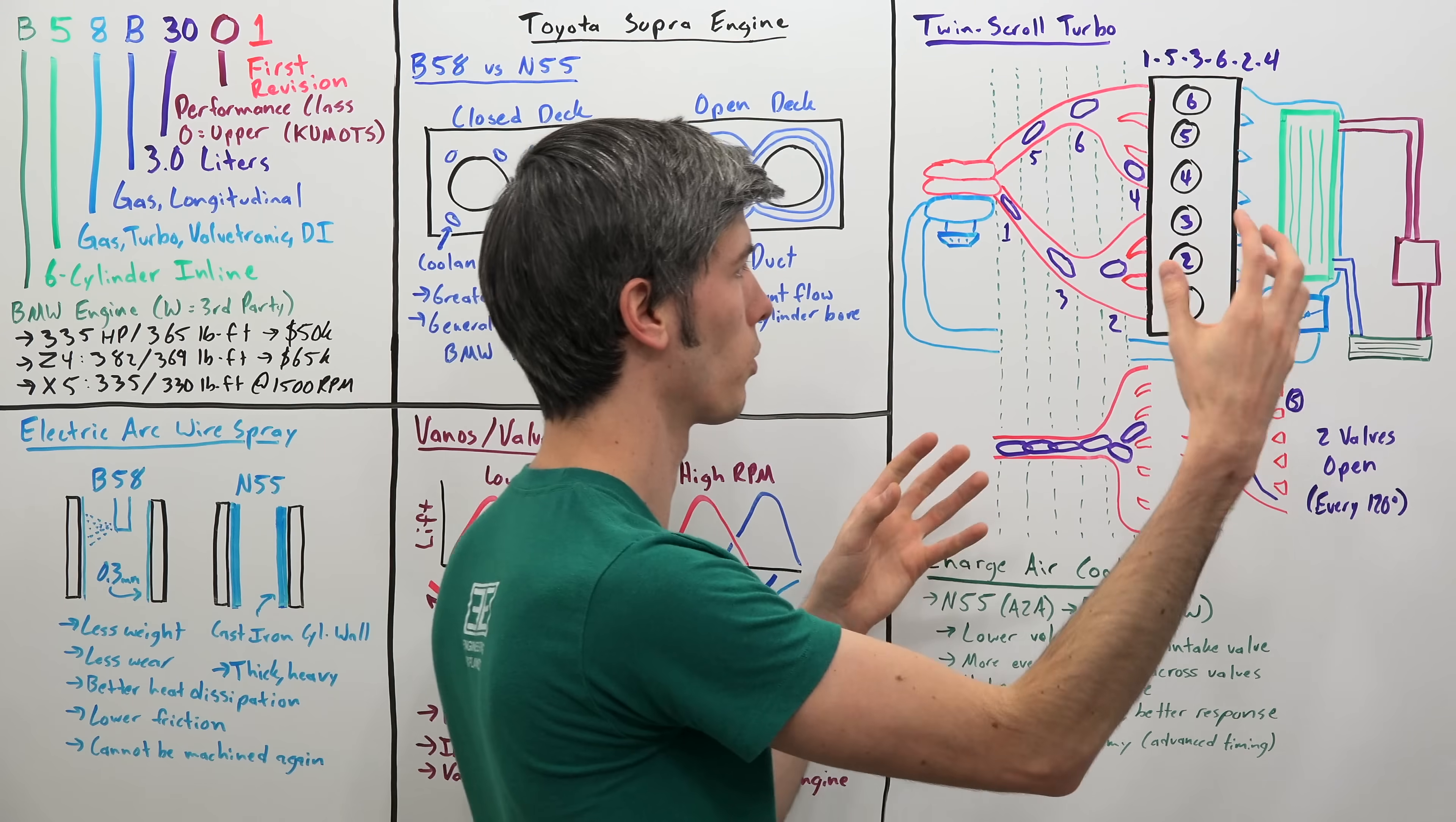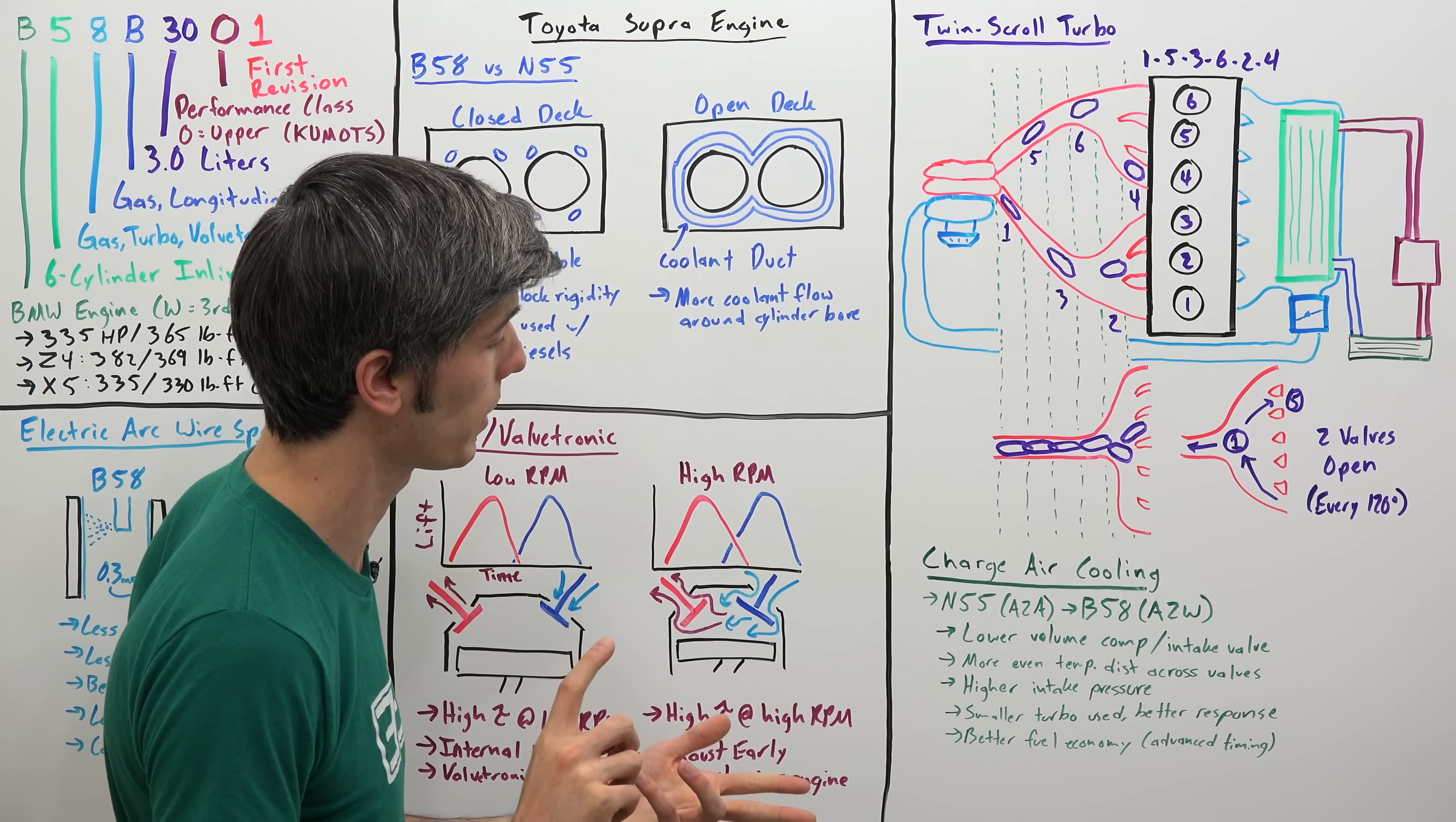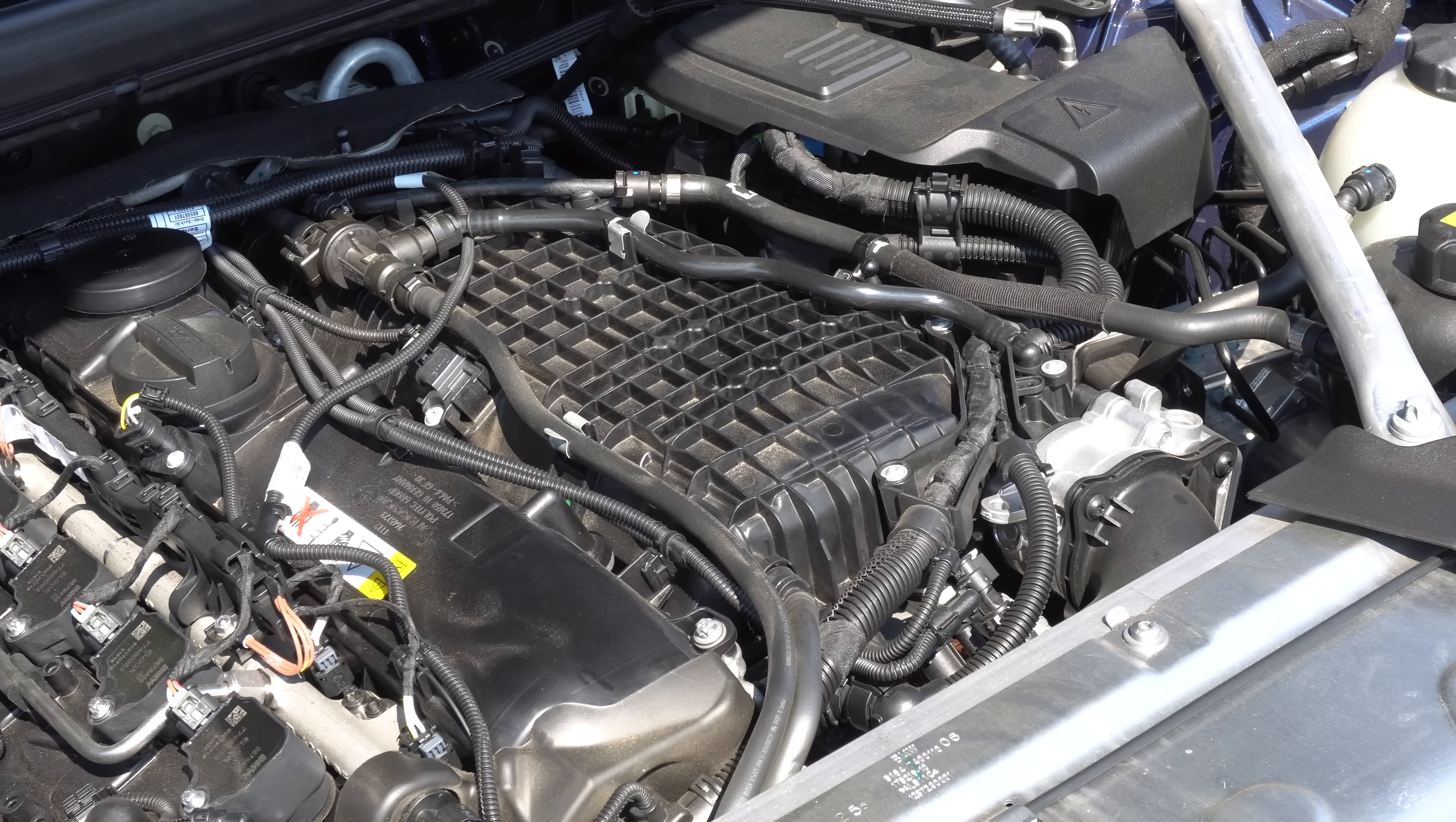It also has a higher intake pressure, of course, using that intercooler reducing temps and increasing the density of that air before it passes into the cylinders. They say they've been able to use a smaller turbocharger which improves response, and that they have been able to improve fuel economy by decreasing the temperature of the air going in. That means combustion temperatures are low and they can use a bit more advanced timing, create a bit more power, and operate more efficiently.